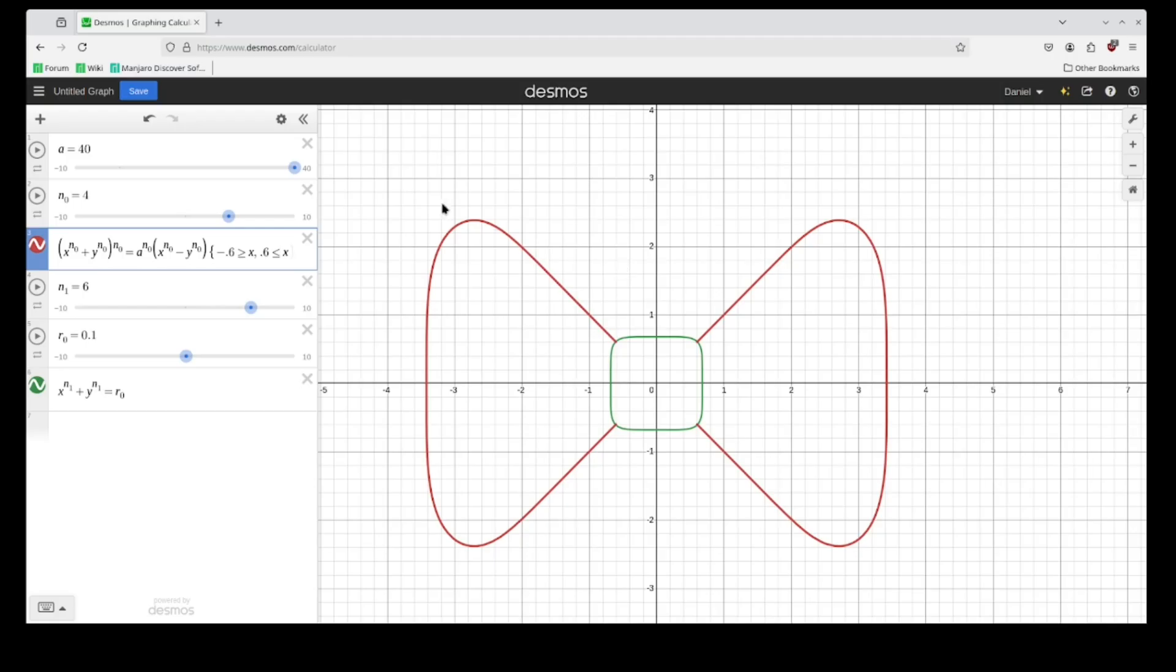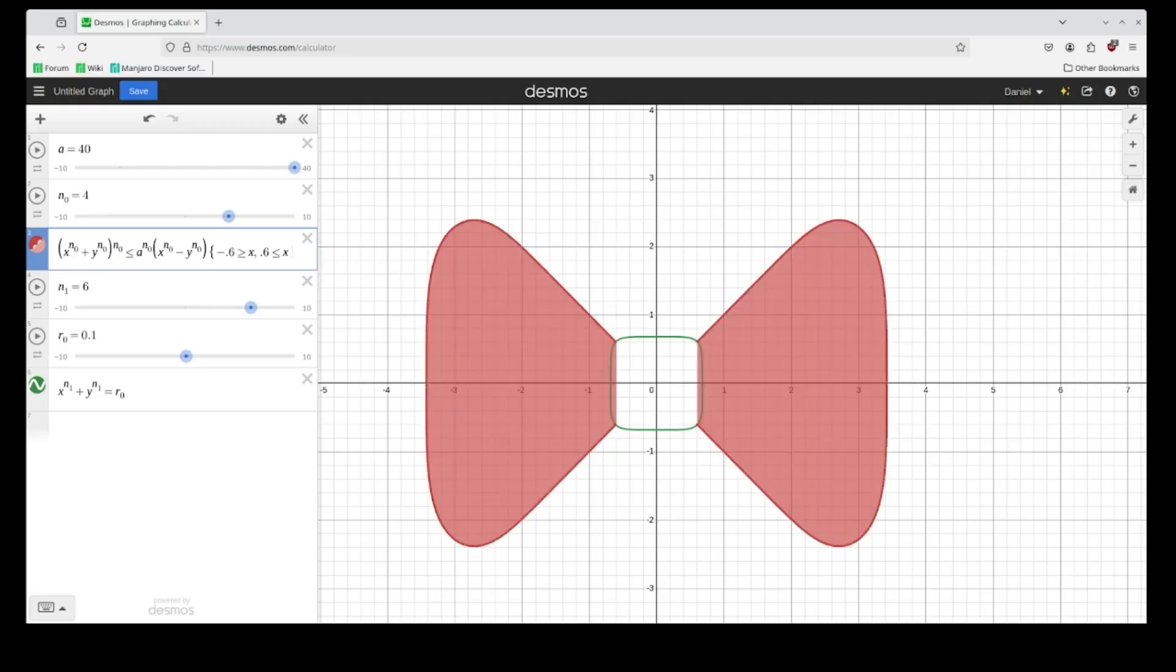Now, let's color this. And so to do that, I think we can get by with just making this an inequality. So it makes it less than or equal to, and then we make this a less than or equal to.